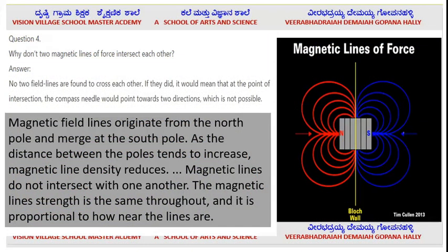The topic is whether Magnetic Lines of Force intersect each other. This is a question from the Karnataka Education Board — that is the SSLC Board. Magnetic field lines originate from the North Pole and merge at the South Pole. As the distance between the poles increases, magnetic line density reduces. Magnetic lines do not intersect with one another.